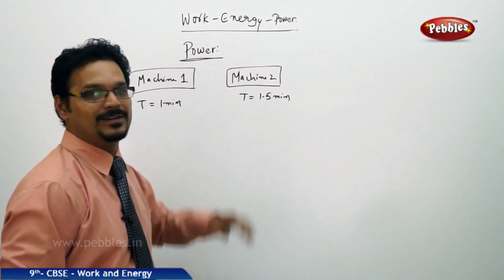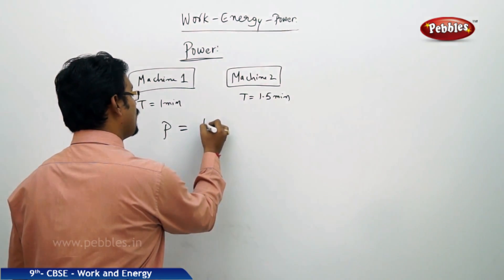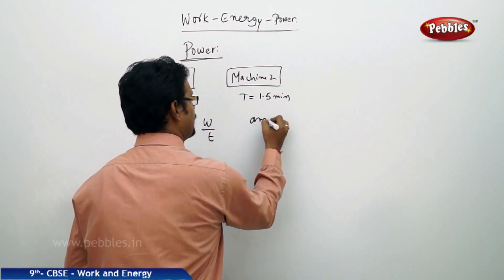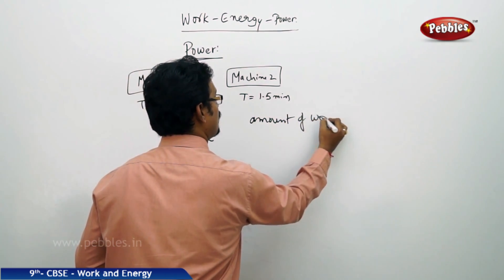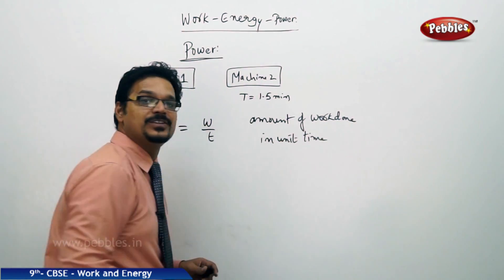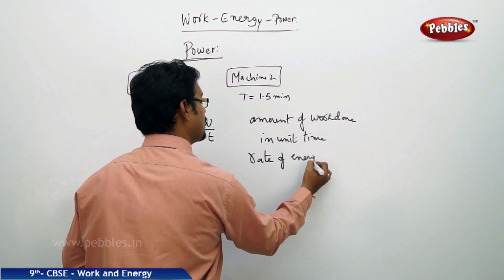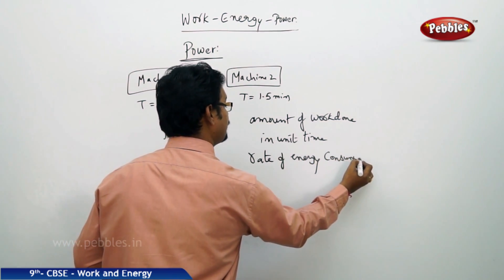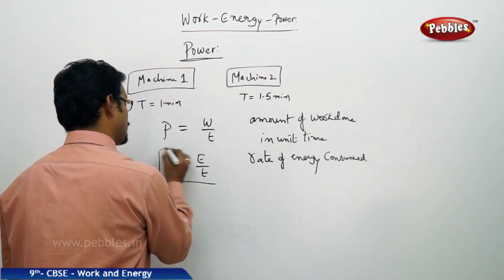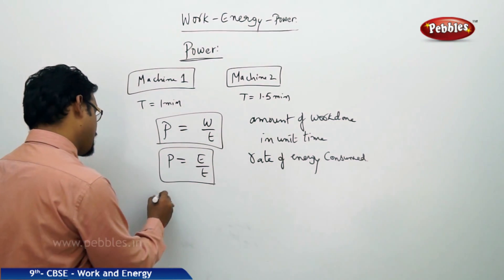So here our concept is power. How do we measure power? Power is defined as the amount of work done in unit time. One more definition is: it is the rate of energy consumed. So in that case, power formula is energy by time. So you have two types of formulas: work by time, or energy by time.